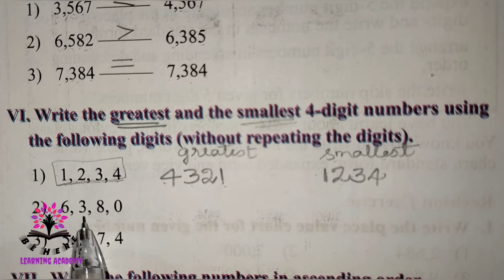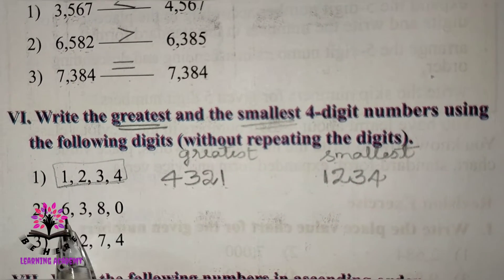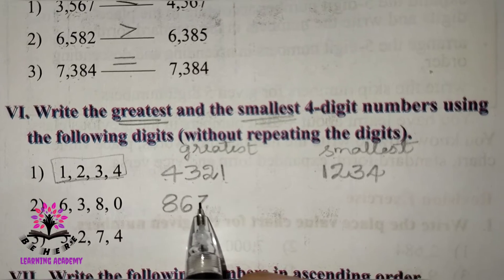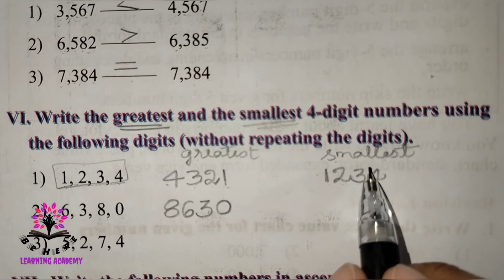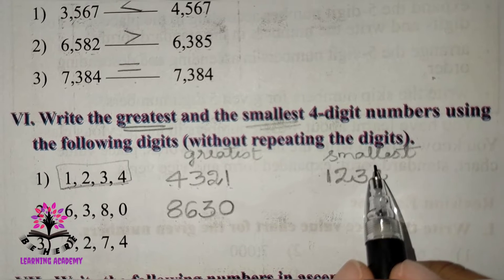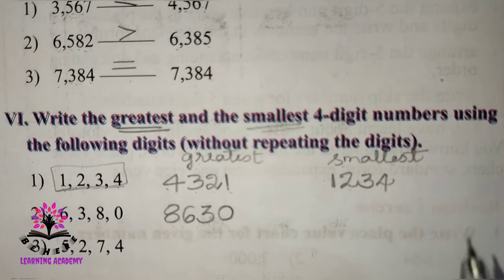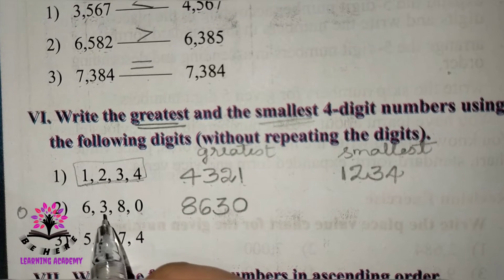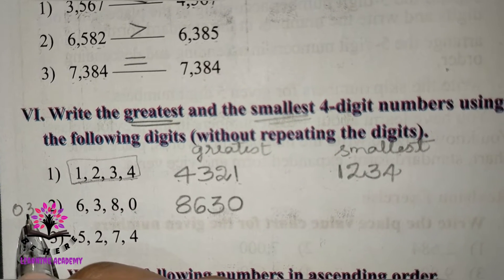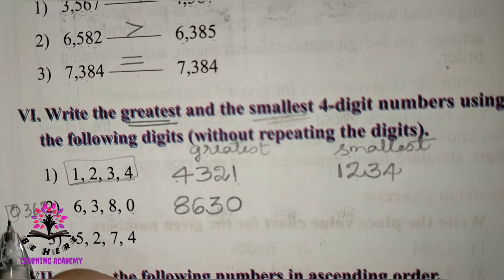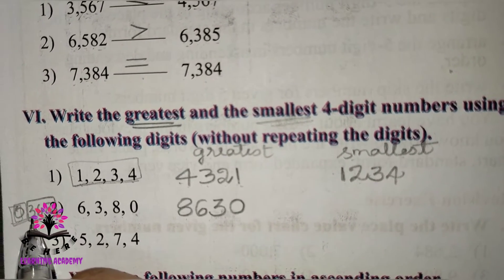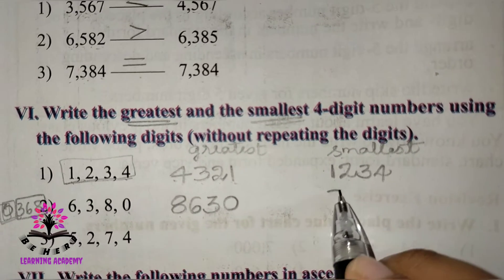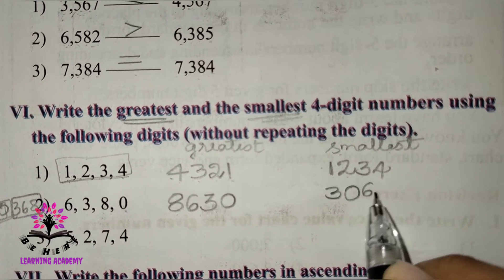Second set: digits 6, 3, 8, 0. For greatest, write in descending order: 8, 6, 3, 0 — giving 8630. For smallest, ascending order would start with 0, but 0 cannot be the leading digit. So interchange: write 3, 0, 6, 8 — giving 3068.